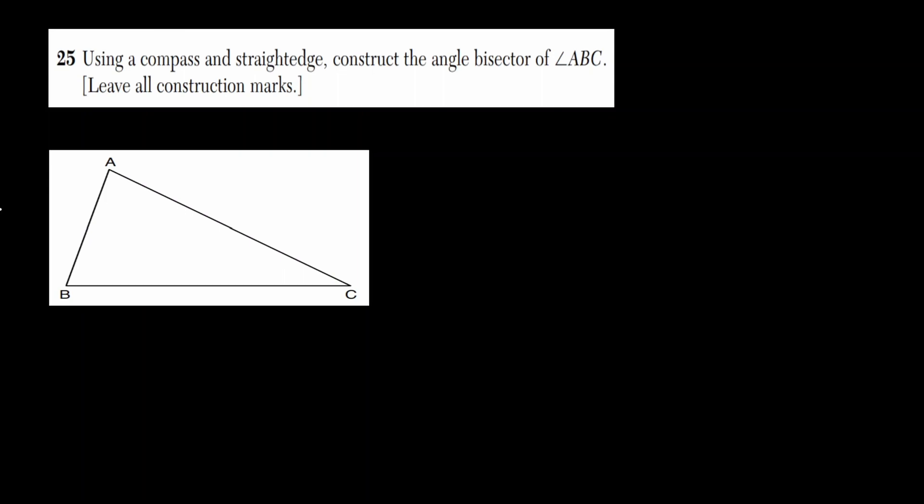Welcome. Let's discuss the open-ended questions for the geometry Regents for January 2023. In our first question, we would like to use our compass and a straightedge to construct an angle bisector on angle ABC.